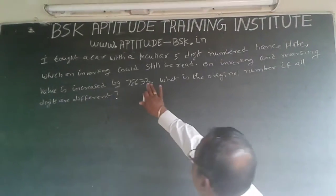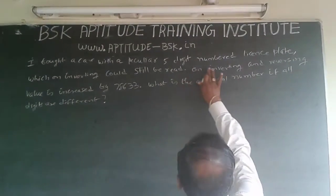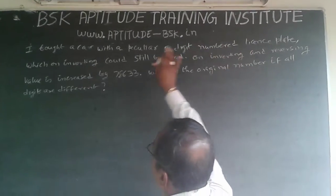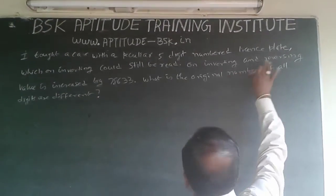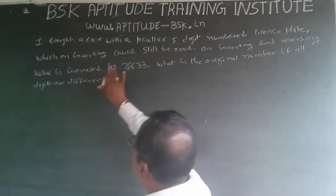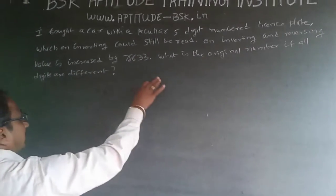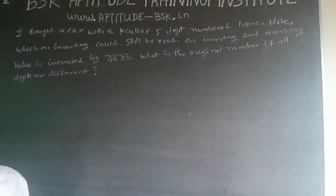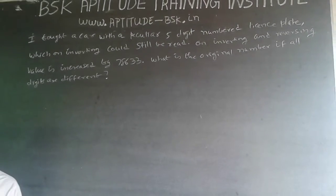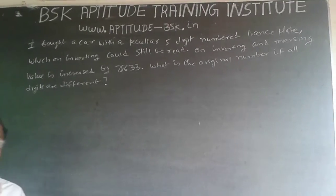The question is, I bought a car with a peculiar 5-digit number license plate, which on inverting would still be read. On inverting and reversing, value is increased by 78633. What is the original number if all the digits are different?